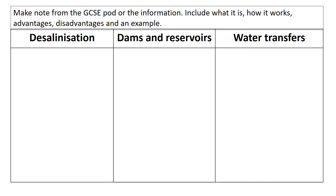Here is your note-taking table. Fill in notes about the three different strategies from either the GCSE Pod or the text. For each strategy you need to include: what it is, how it works, the advantages, any disadvantages or problems, and an example. Stop the presentation and fill in all three sections — it's important that you do this, otherwise you will struggle with the next part.